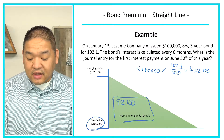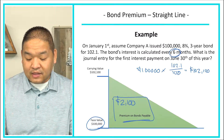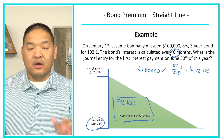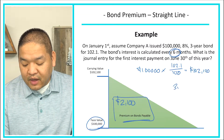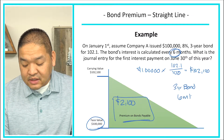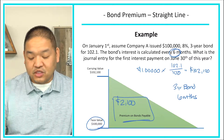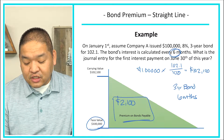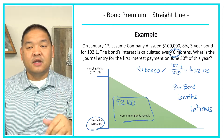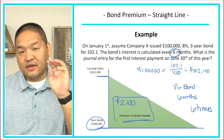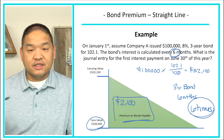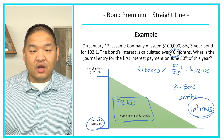The bond interest is calculated every six months. What is the journal entry for the first interest payment on June 30th? We have a three-year bond with six months between each interest payment. Therefore we are going to pay interest six times — twice a year over three years is six payments — and we are going to allocate our bond interest six times over the life of the bond.